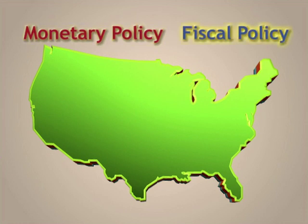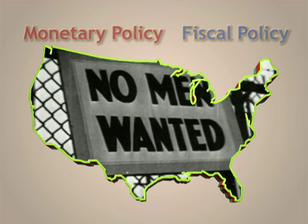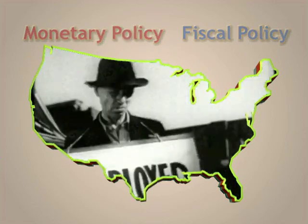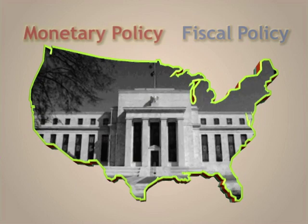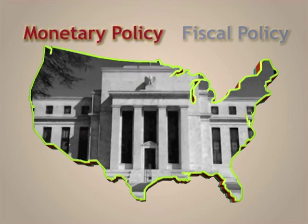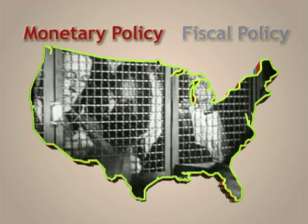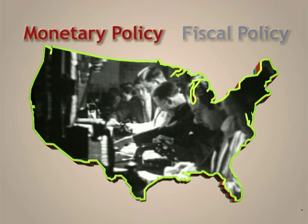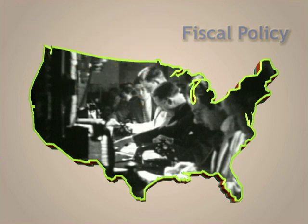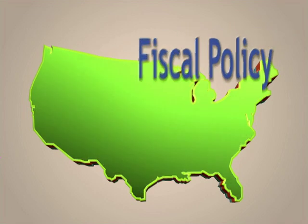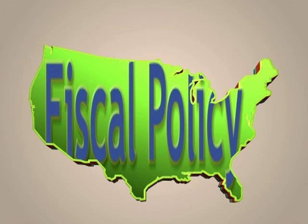Neither of them, it was argued, had been used the way they should have been to avoid the Great Depression. Monetary policy is run by the Federal Reserve Bank, which was created not long before the Depression, in 1913. Many economists think that after the stock market crash of 1929, the Fed was paralyzed, and that its failure to take action led to the economy-wide collapse. But we'll set aside monetary policy and the Fed for another video.